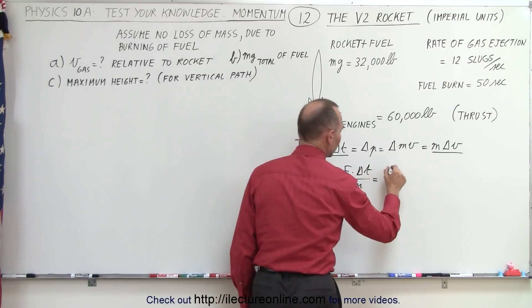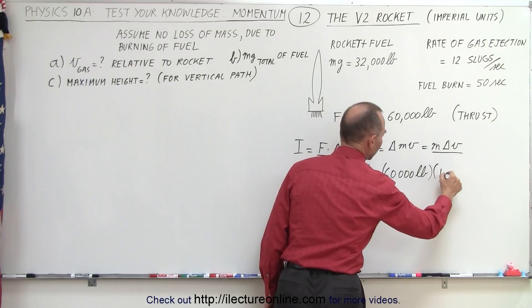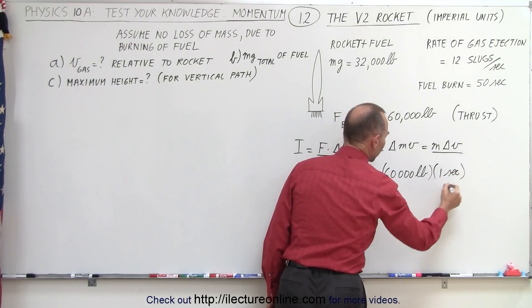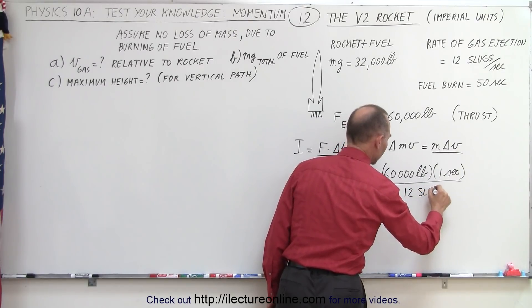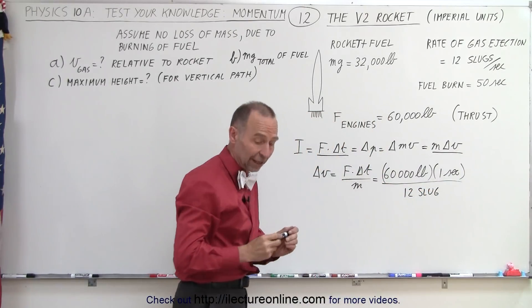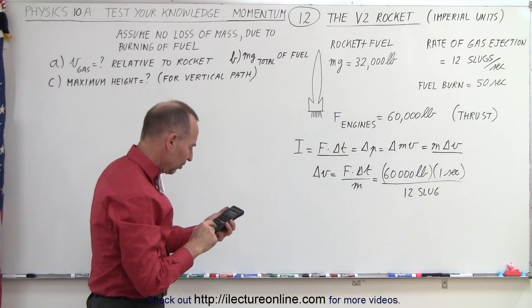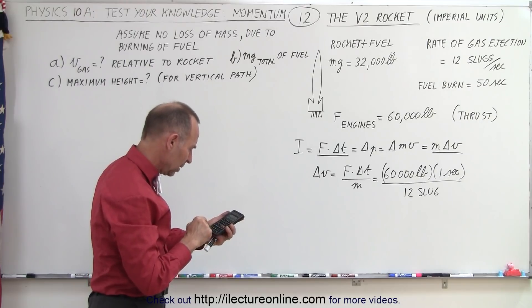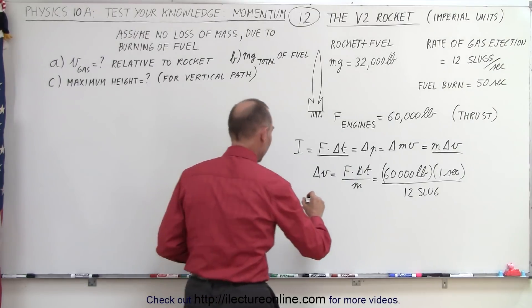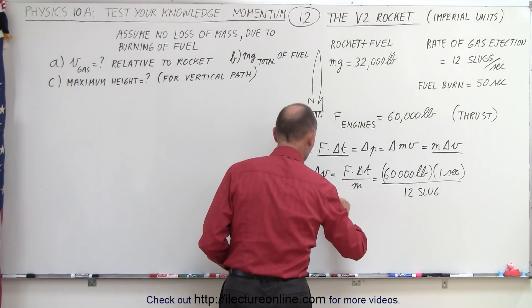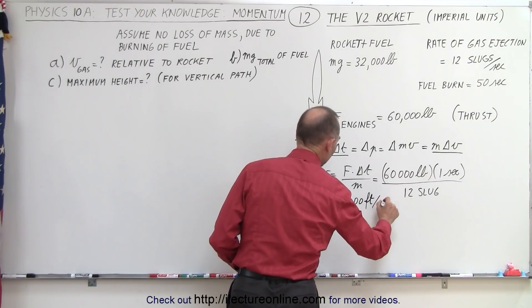We solve for delta v by setting m times delta v equal to F times delta t, so delta v equals force times delta t divided by mass. In this case, the force is 60,000 pounds, the time is one second, and the mass is 12 slugs. That gives us the velocity in feet per second: 60,000 times 1 divided by 12 equals 5,000 feet per second. So the ejection velocity of the burned gases is 5,000 feet per second.